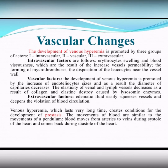Intravascular factors follow erythrocyte swelling and blood viscousness, which are the result of increased vessel permeability. Vascular factors: the development of venous hyperemia is promoted by the increase in endothelial cell sizes and, as a result, the diameter of capillaries decreases. Extravascular factors: edemic fluid easily squeezes vessels and deepens the violation of blood circulation.